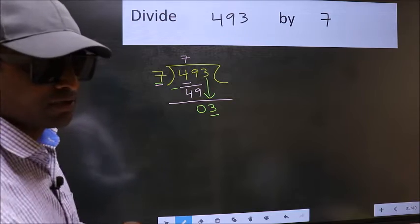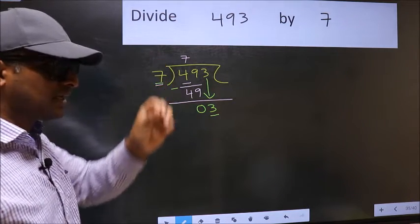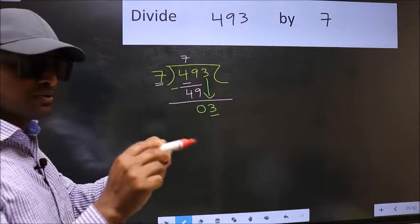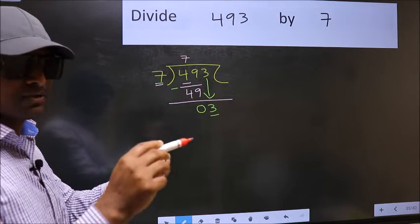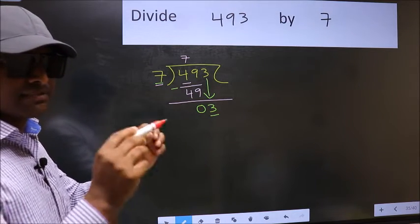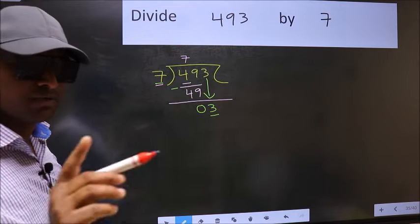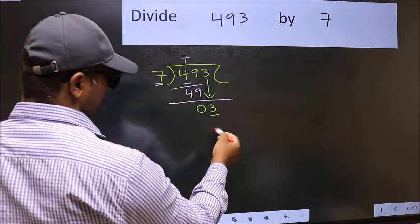I repeat: bringing the number down and also putting a dot and taking 0, both at the same step, you should not do. Instead, what you should think of doing is, what number should we take here?